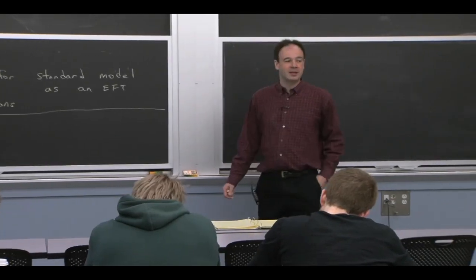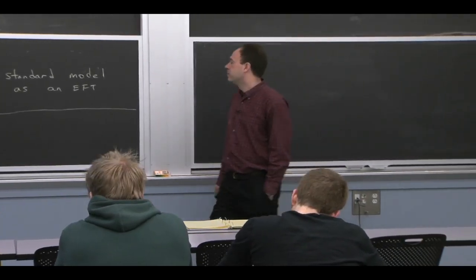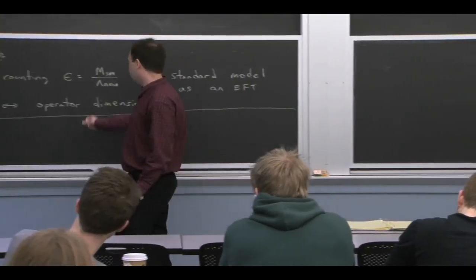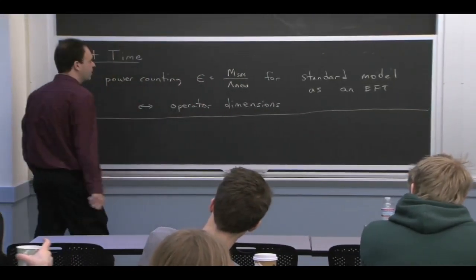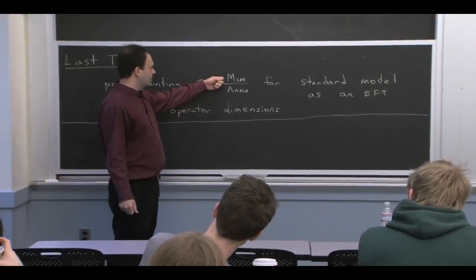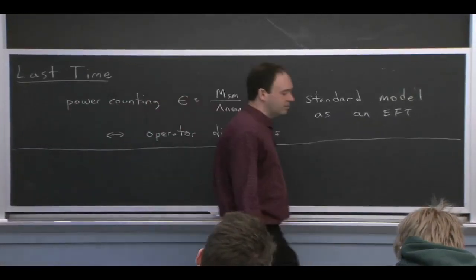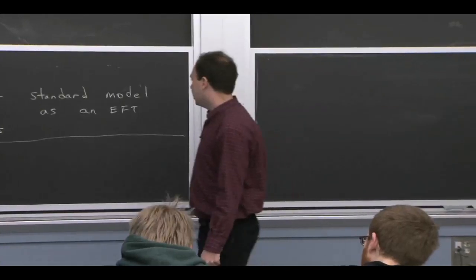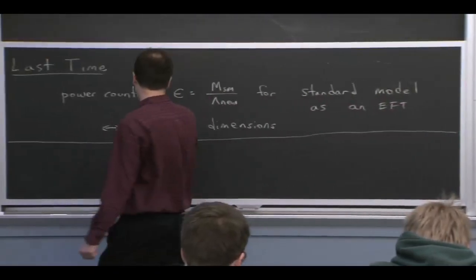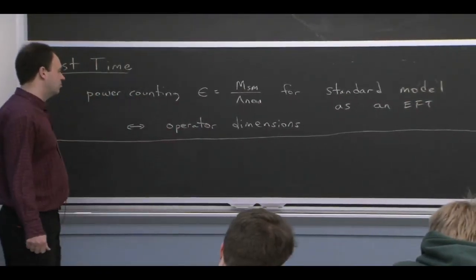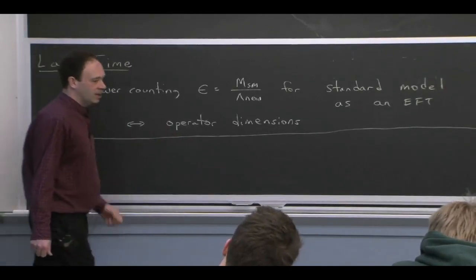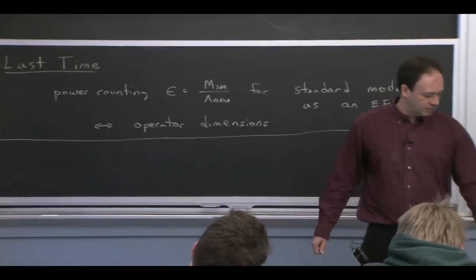So last time we were talking about the standard model as an effective field theory. And we decided that the power counting would be in this epsilon, the masses of the particles in the standard model, the scales in the standard model, divided by some new physics scale outside the standard model. And I made the statement that this was connected to operator dimension, but I didn't make that precise. And I want to do that now as the first thing we do today.